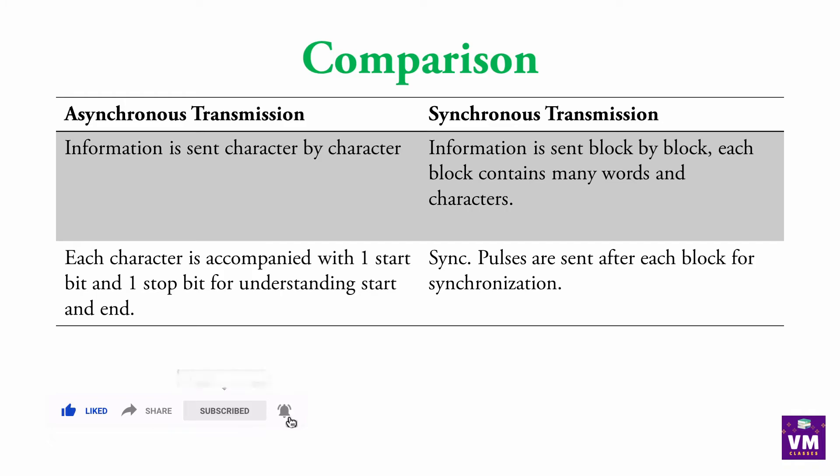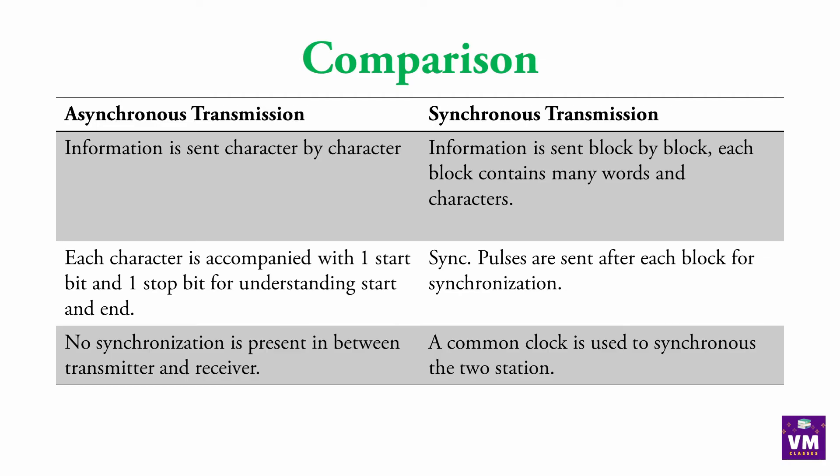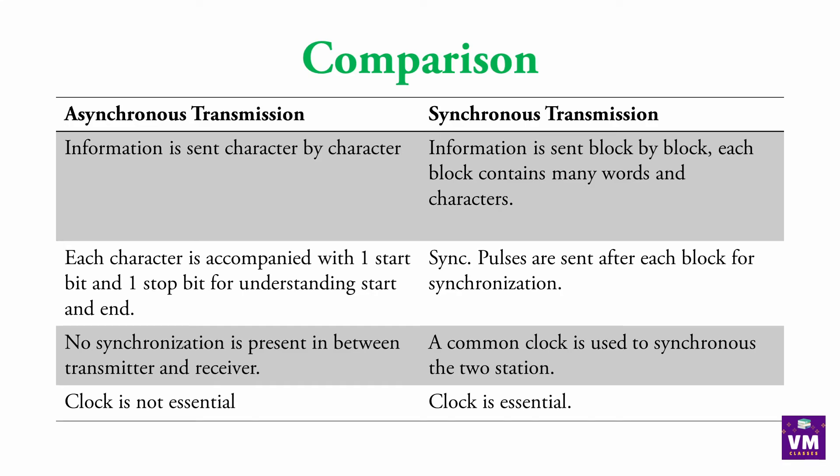Each character is accompanied with one start bit and one stop bit for understanding start and end — start और end के लिए एक एक bit होता है। Synchronous pulses are sent after each block for synchronization. No synchronization is present between transmitter and receiver in asynchronous — asynchronous नाम से ही पता चलता है कि यहाँ synchronization नहीं होता। Synchronous में synchronization होता है; a common clock block is used to synchronize two stations. Clock is not essential in asynchronous, but clock is essential in synchronous।